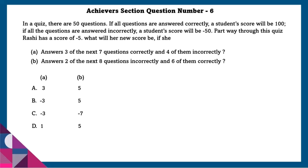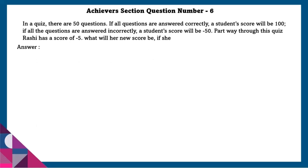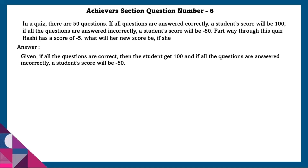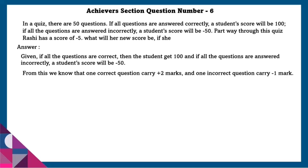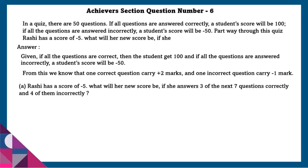Part B asks: Rashi answers 2 of the next 8 questions incorrectly and 6 of them correctly. Given that all correct gives 100 and all incorrect gives minus 50, we know each correct question carries plus 2 marks and each incorrect question carries minus 1 mark. Now we can solve the questions.